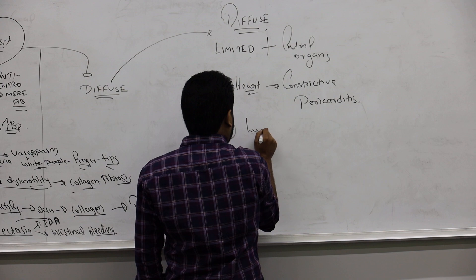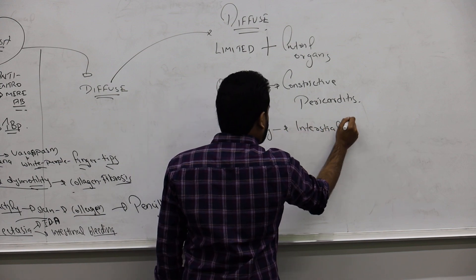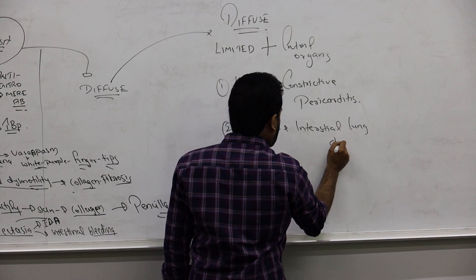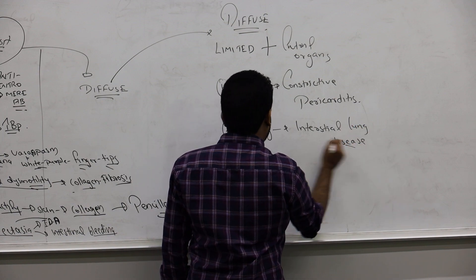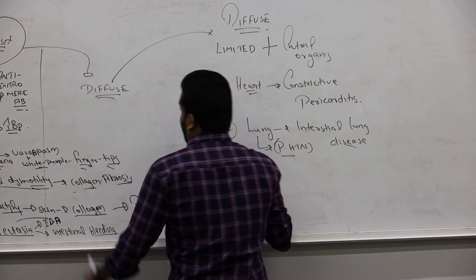They will have lung disease - interstitial lung disease. As a result, they can have pulmonary hypertension. Here there is injury to the lung, whereas in limited there was pulmonary hypertension without injury to the lung.